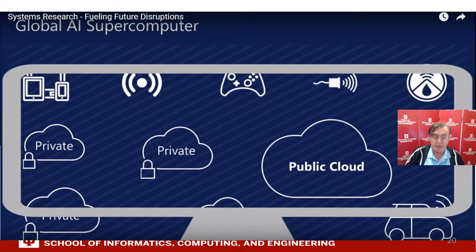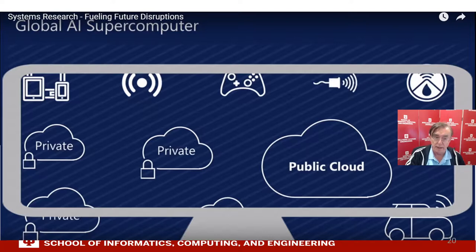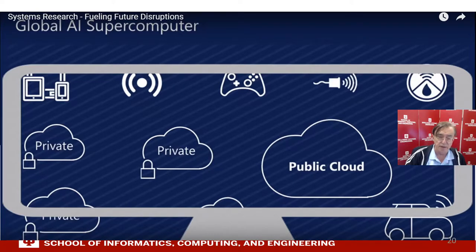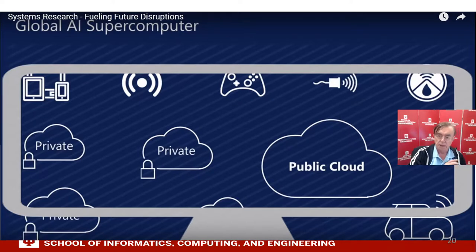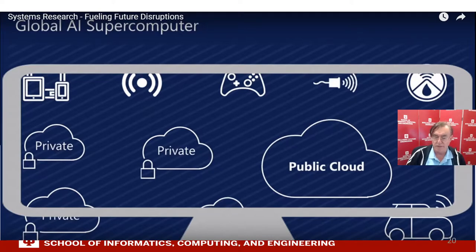The global AI supercomputer has joined everything together. It's important to note the AI supercomputer is not just the cloud — it's the cloud plus the edge. The cloud and the edge are equally important, and the edge effectively does cloud-like computing where it's called the fog. The cloud is continuous — it goes from the center to the edge, and as you get nearer the center you get more powerful and have access to more data.